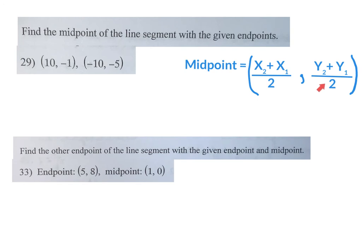Some of you subtracted on the midpoint on your quiz. Midpoint is adding — it is the average. You add and divide by how many you have. Distance formula uses subtraction between your variables, but midpoint is addition. Many of you subtracted, so if you see a little plus sign marked above your midpoint answer, that means you subtracted instead of added.